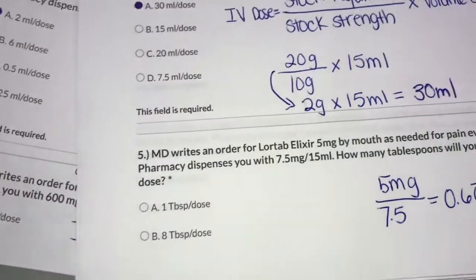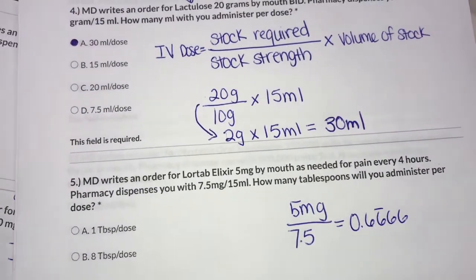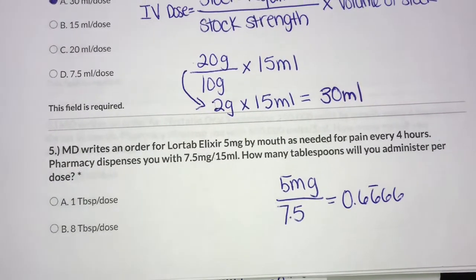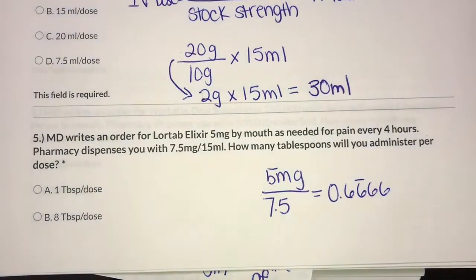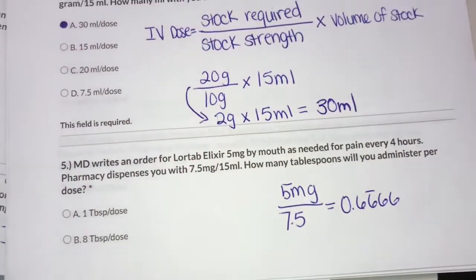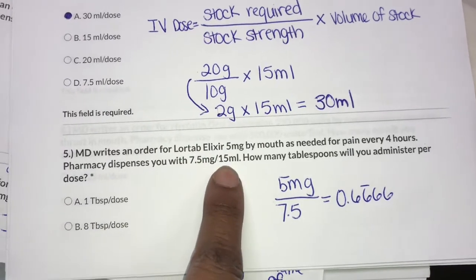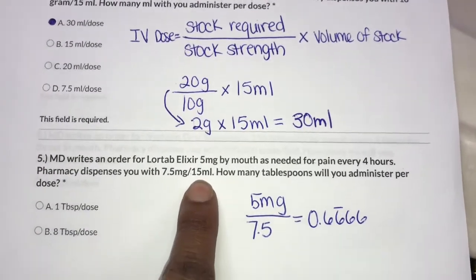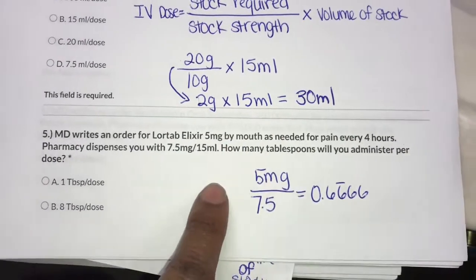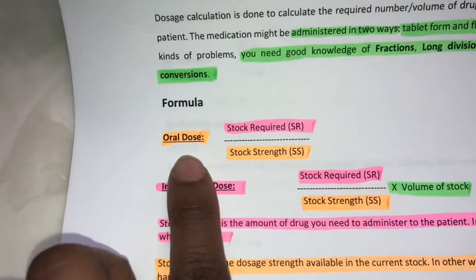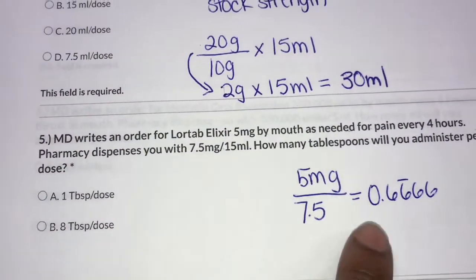The last question: the MD writes an order for Lortab — which is basically hydrocodone, a pain medication — by mouth as needed for pain every four hours. Pharmacy dispenses you 7.5 mg per 15 ml. How many tablespoons will you administer per dose? They gave you a lot of numbers to throw you off — 5 mg, four hours, 7.5 mg, 15 ml. Notice they're asking for tablespoons, not the IV dose. So I used the oral dose formula: 5 mg divided by 7.5 = 0.6 tablespoons.